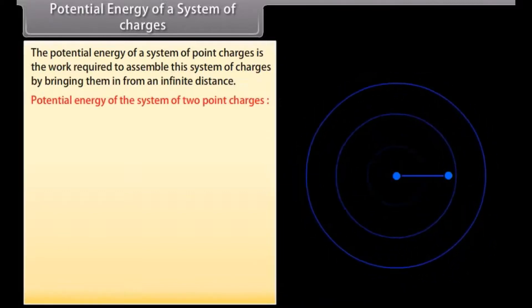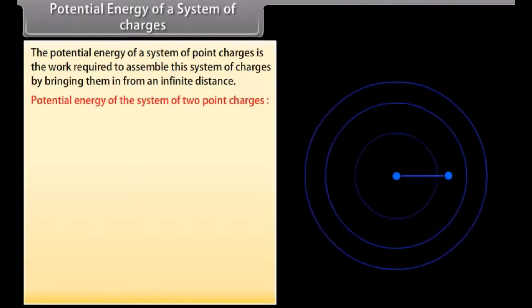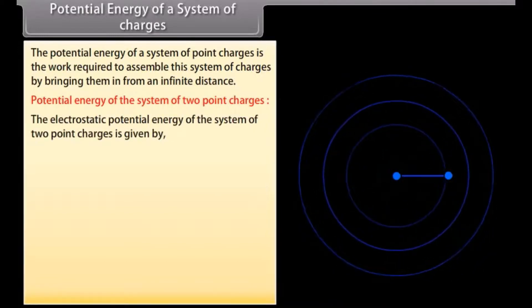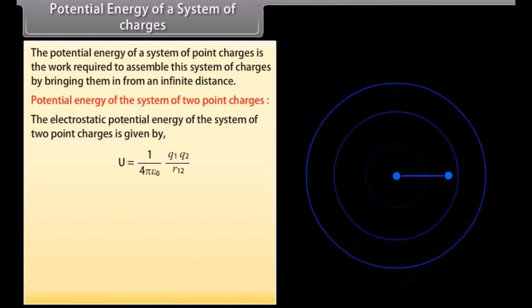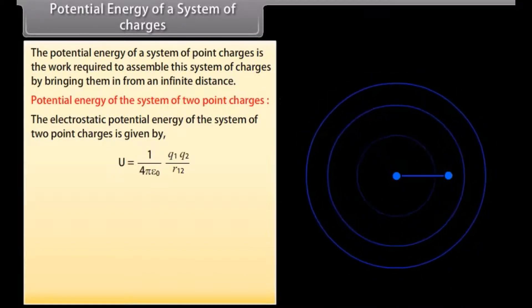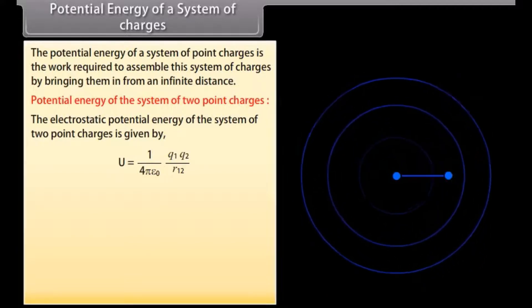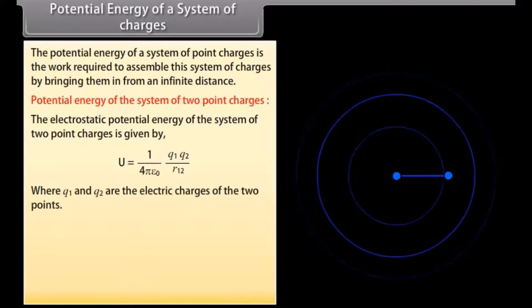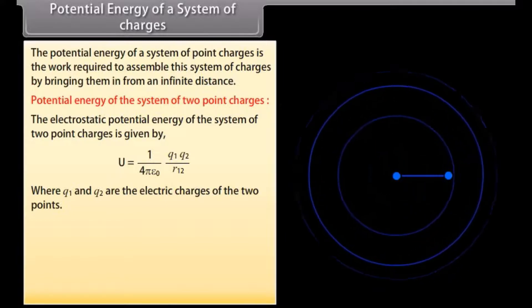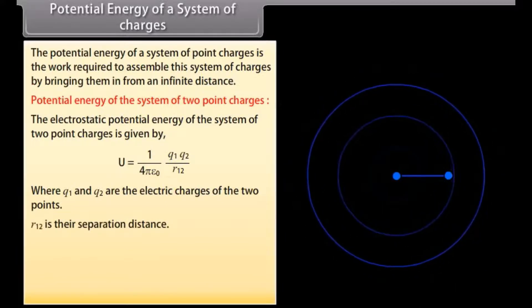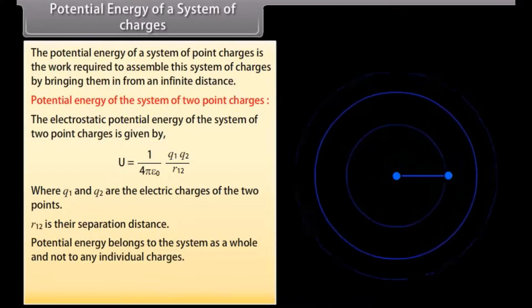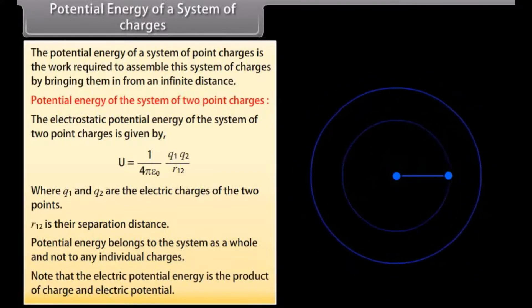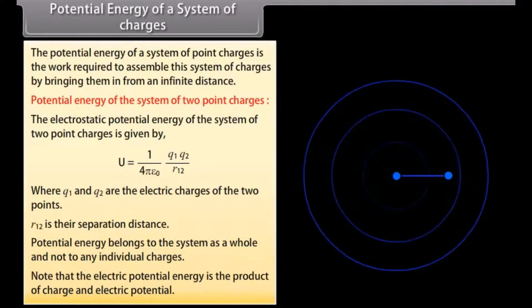Potential energy of the system of two point charges: The electrostatic potential energy of the system of two point charges is given by U equals one upon four pi epsilon naught multiplied by Q1 Q2 upon R12, where Q1 and Q2 are the electric charges of the two points and R12 is their separation distance. Potential energy belongs to the system as a whole and not to any individual charge. Note that electric potential energy is the product of charge and electric potential.